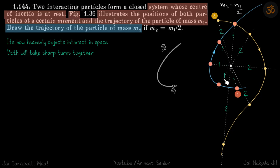And this kind of behavior is observed in the heavenly objects. That's how they interact in space, so like two stars or two galaxies, they interact in such manner.